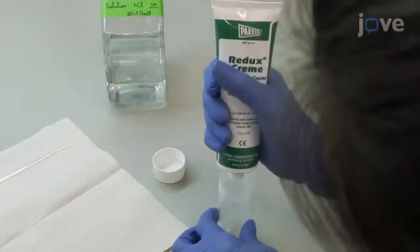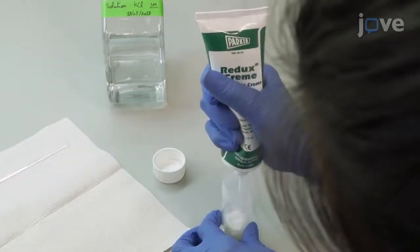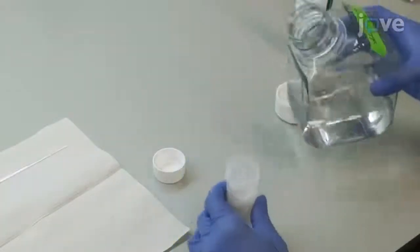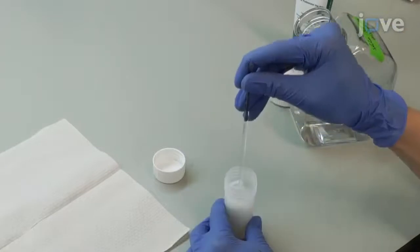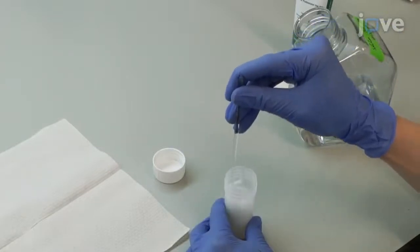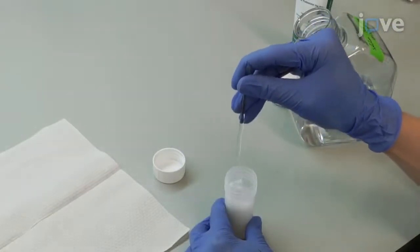Subsequently, prepare a cream mix by mixing the electrolyte cream and saturated 3 molar potassium chloride solution in a ratio of 1 to 1, avoiding formation of tiny air bubbles.